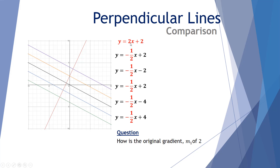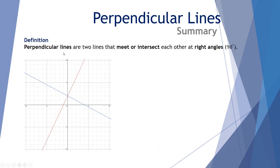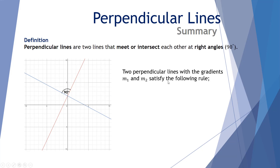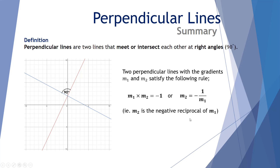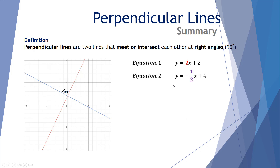How is the original gradient m1 of 2 related to the perpendicular gradient m2 of negative a half? The rule is: two perpendicular lines with gradients m1 and m2 must satisfy m1 times m2 equals negative 1, or equivalently m2 equals the negative reciprocal of m1, which is negative 1 over m1. For example, y equals 2x plus 2 and y equals negative a half x plus 4 — multiplying their gradients: 2 times negative a half equals negative 1. This confirms they are perpendicular.